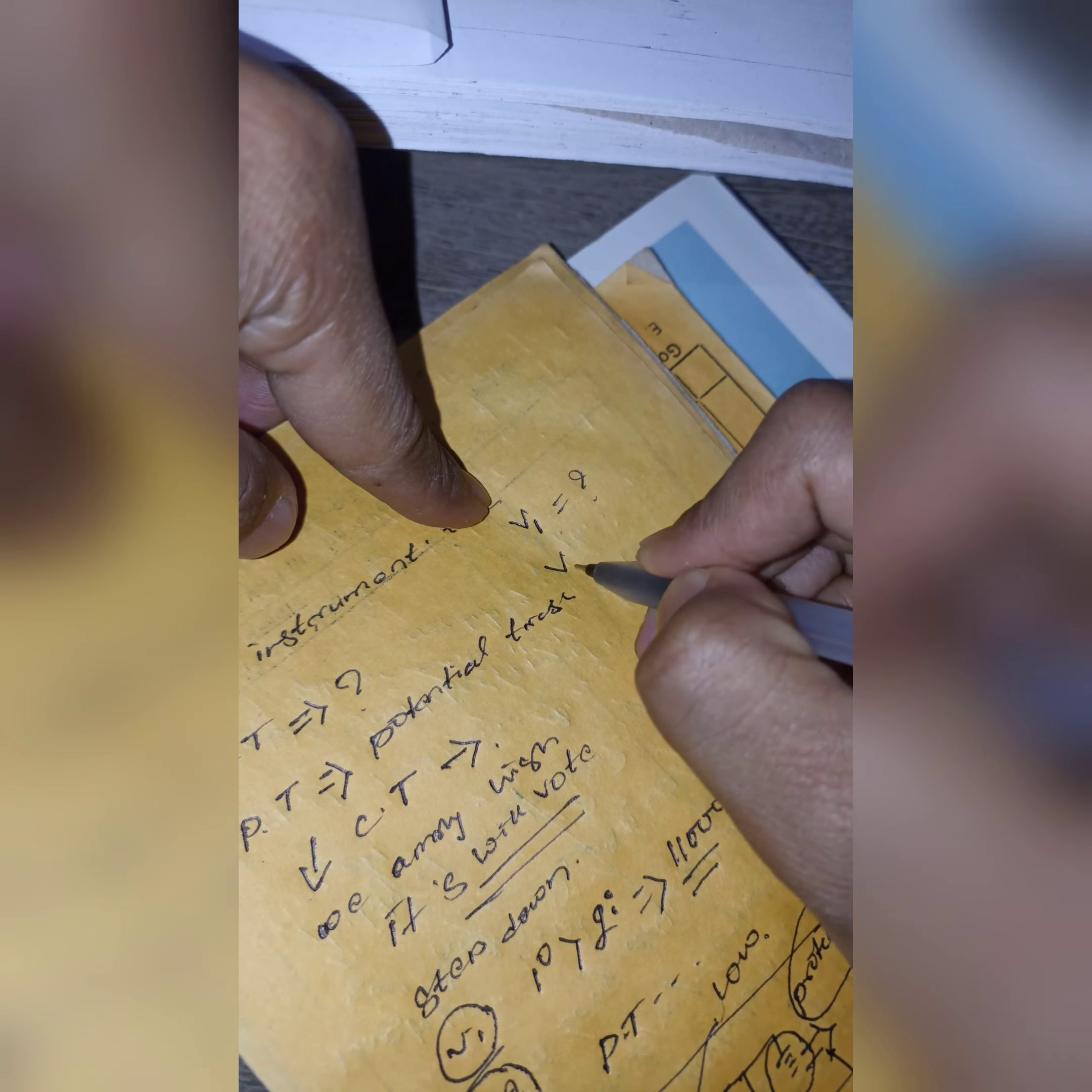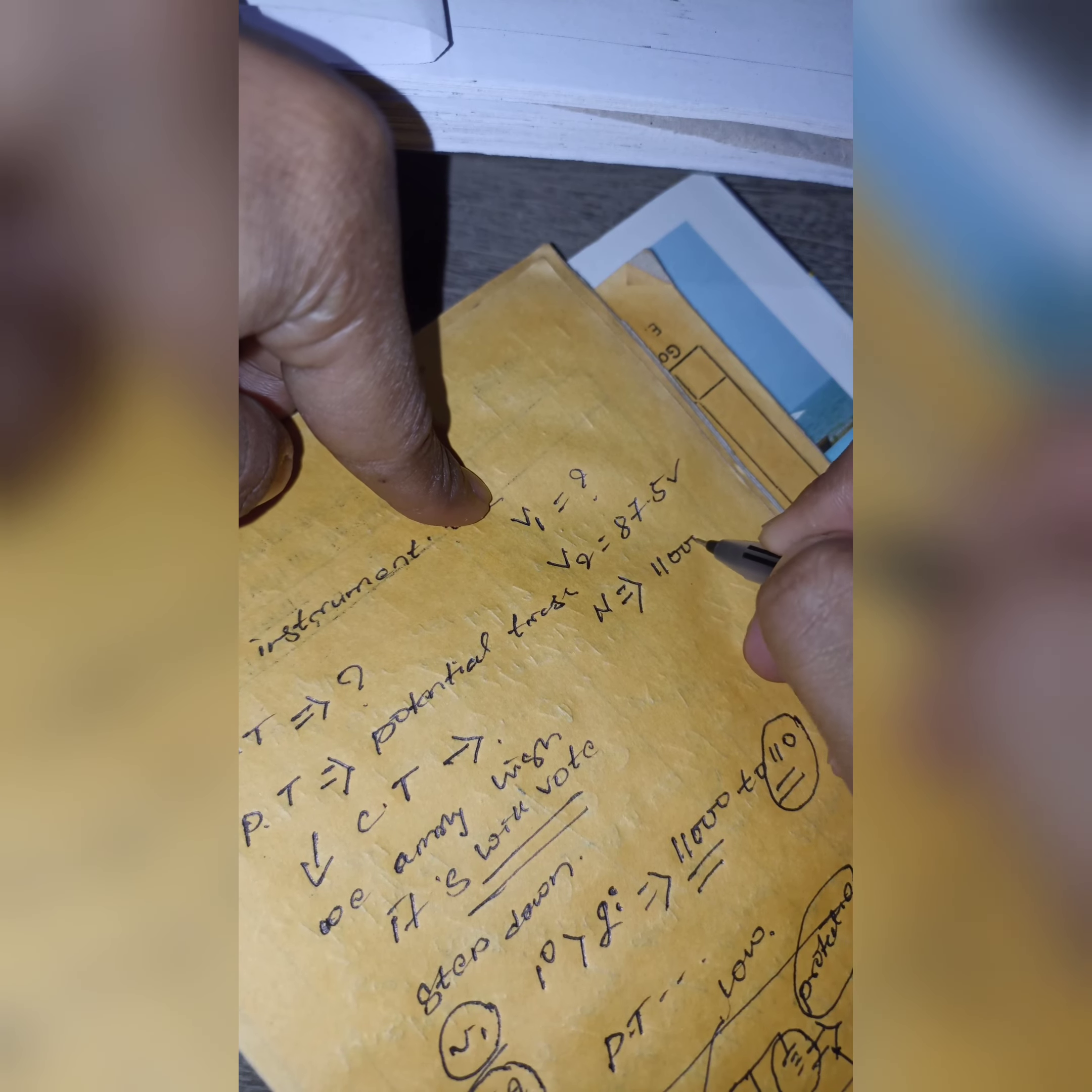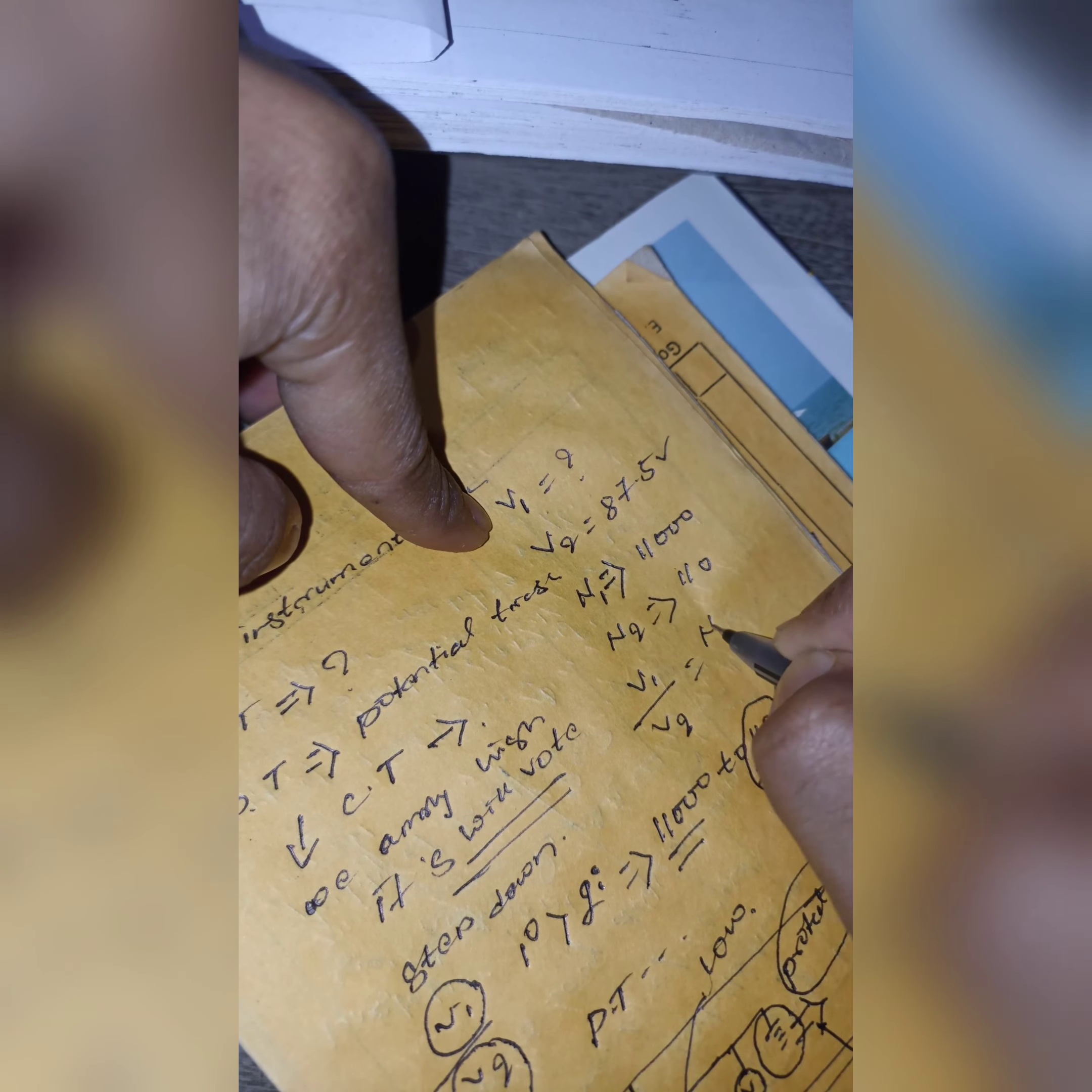Suppose one example: V1 we have to find, V2 is given as 87.5 volts, number of turns N1 is 2000, and number of turns N2 is 100. Now you know the formula: V1 by V2 equals N1 by N2. Now put the values of V2, N1, and N2.